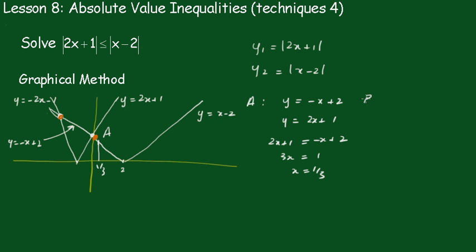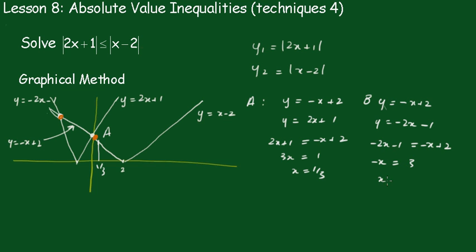And the other one, point B: we've got y equals minus x plus 2 again, but we're on the other branch here, so y equals minus 2x minus 1. Solving those: minus 2x minus 1 equals minus x plus 2. Taking this across, we get minus x equals 3, so x equals negative 3.